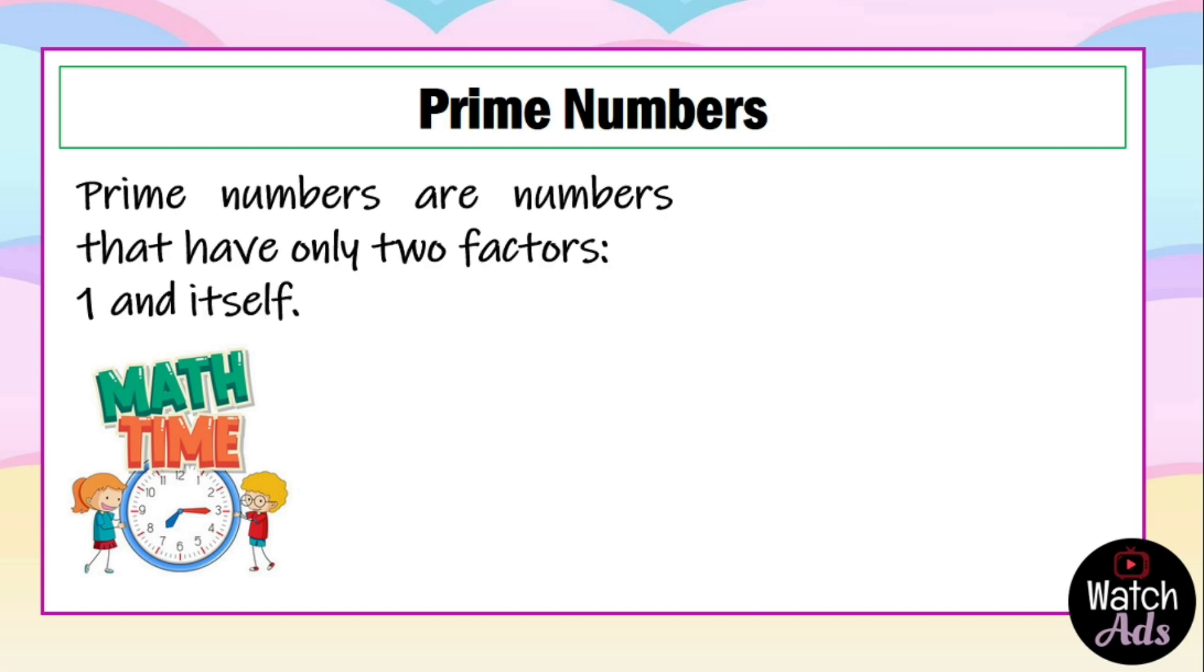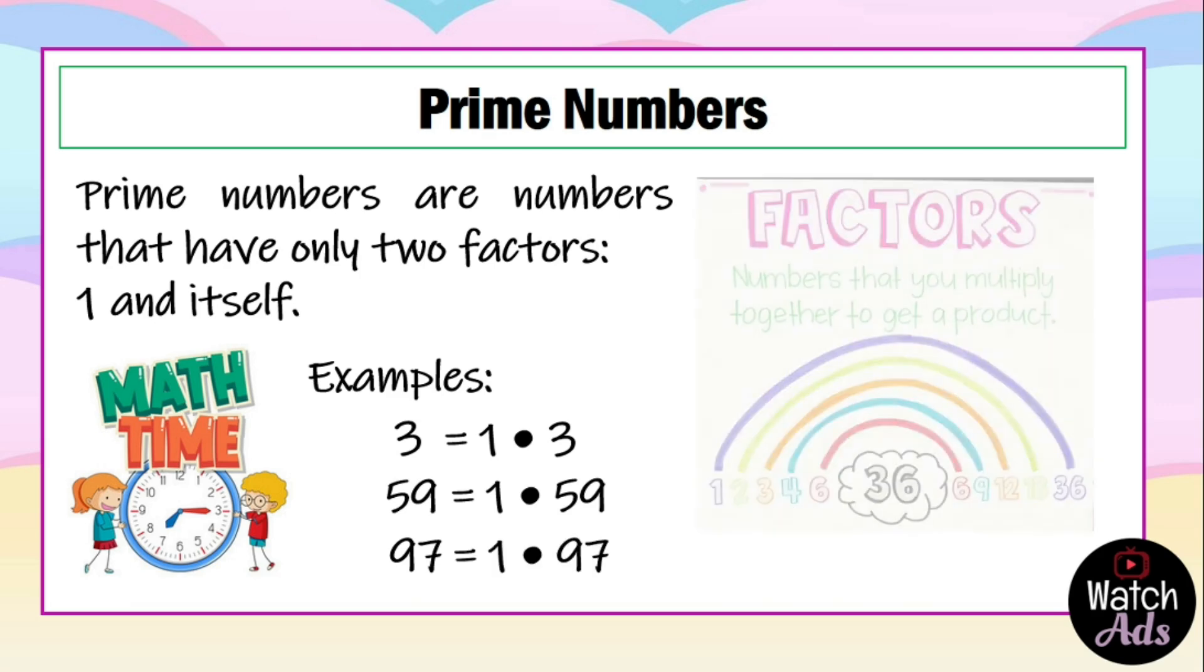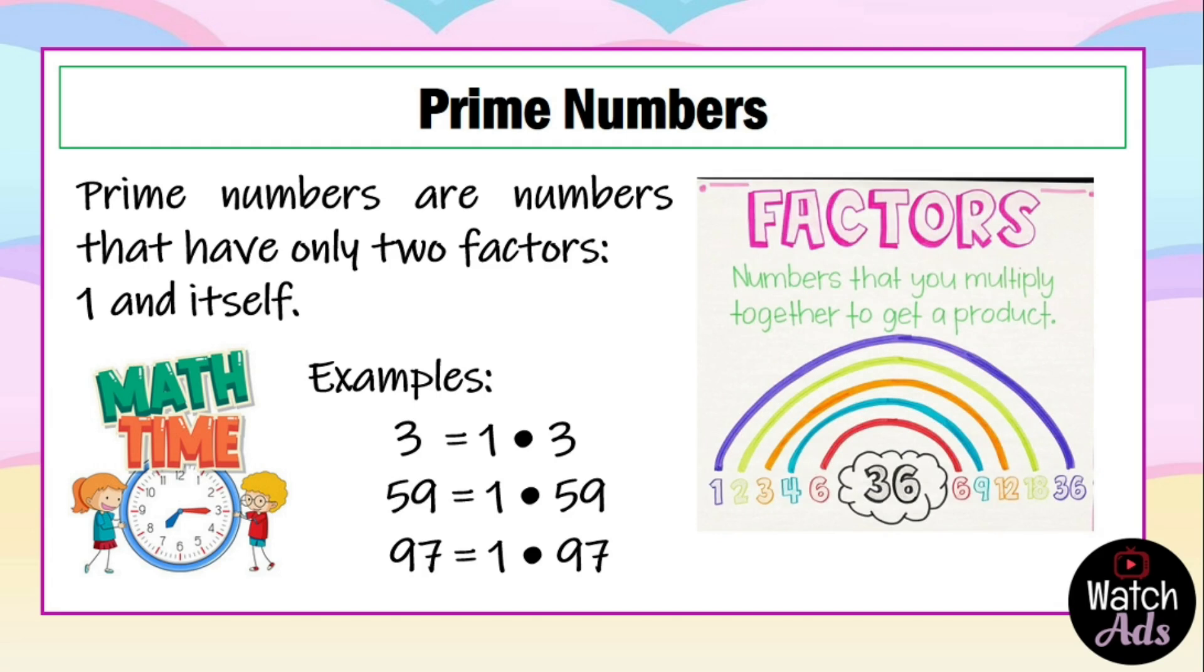Remember, prime numbers are numbers that have only two factors, that is 1 and itself. Examples: we have 3. 3 is prime because it only has two factors, 1 and 3. 59 is also prime because it only has two factors, 1 and 59. And 97 is a prime number because it only has two factors, 1 and itself. Remember, factors are numbers that you multiply together to get a product.